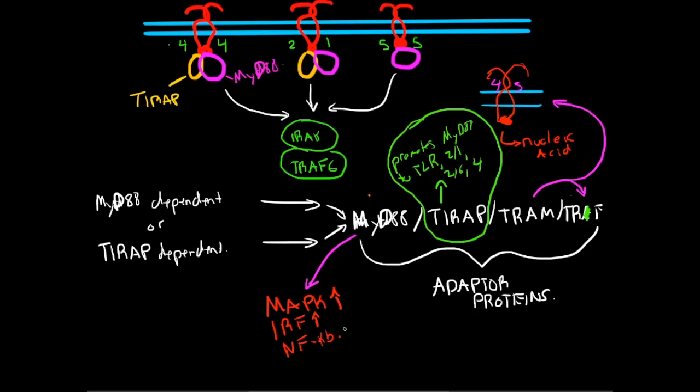TRAF dependent TLR signaling activates MAPKs and IRFs to induce, so here I'll do this TRAM in purple again. TRAM takes this and induces interferon alpha and beta expression.